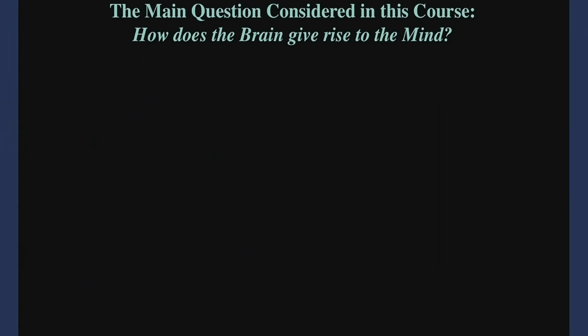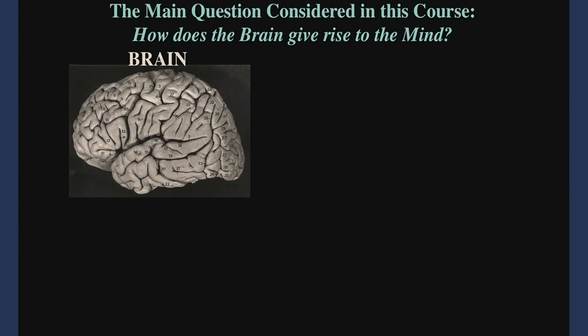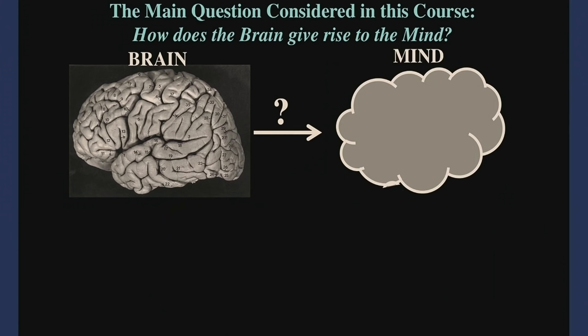The biggest theme in this course is: how does the brain give rise to the mind? For the last few lectures you've been learning about the physical basis of the brain — what it actually looks like. Now the agenda is: how are we going to explain how this physical object gives rise to something like the mind?